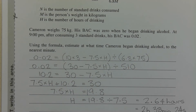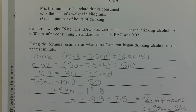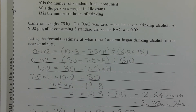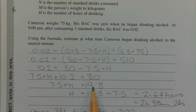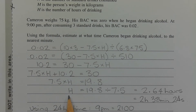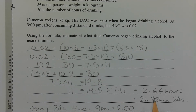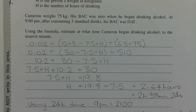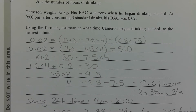Subtracting 10.2 from both sides of the equation, we get 7.5 times H is equal to 19.8. Finally, dividing both sides of the equation by 7.5, we get H is equal to 19.8 divided by 7.5, which equals 2.64 hours.